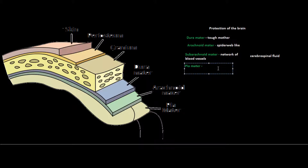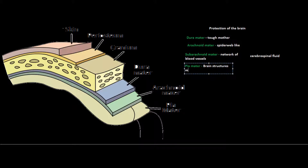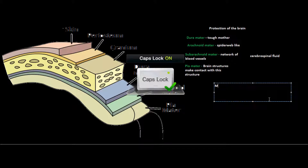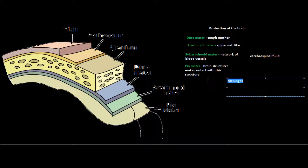Moving down, you have the pia mater, a really thin layer of tissue that actually makes direct contact with the brain. The pia mater is also the site of many small blood vessels such as capillaries that help supply blood to the brain. While the majority of blood vessels are found in the subarachnoid space, the pia mater serves as a diffusion layer of tissue where blood actually enters and leaves the brain.